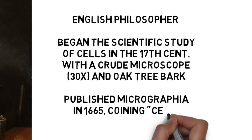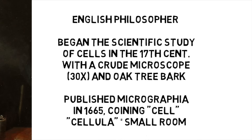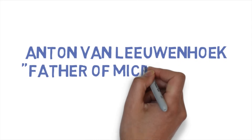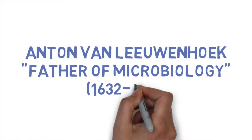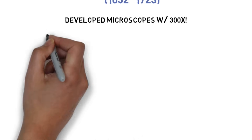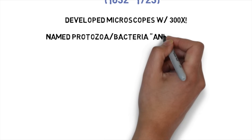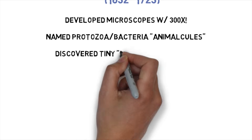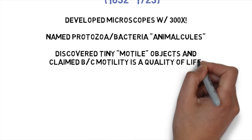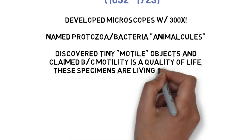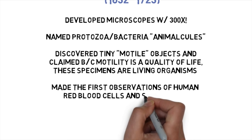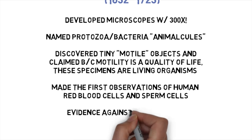The word cell means small room. He couldn't see inside these cells and didn't know if they were alive, but he was the first one to discover that they existed. Shortly after Hooke published his results, a man by the name of Anton von Leeuwenhoek was much more skilled at building microscopes, and he was actually able to build one with 300 times the magnification. He took protozoa and bacteria — which he didn't know were protozoa and bacteria at the time — and named them animalcules. He was able to see that they were motile, and he reported to the Royal Society in the 1600s that because these were motile organisms, representing a quality of life, these specimens were living organisms. He's also credited for making the first observations of human red blood cells and, very importantly, sperm cells, because he was able to observe that sperm and egg were fusing together to create a new generation of cells.